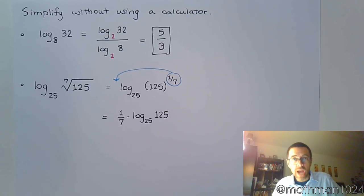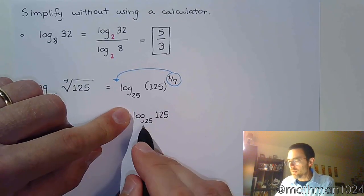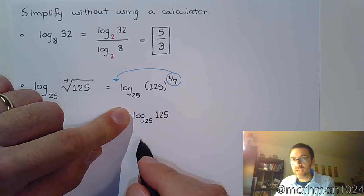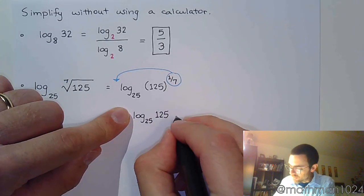And then from here, I would say use the change of base theorem. Don't worry about the 1 over 7 right now. Worry about this stuff right here. These guys have a base that's common. And that common base is 5.